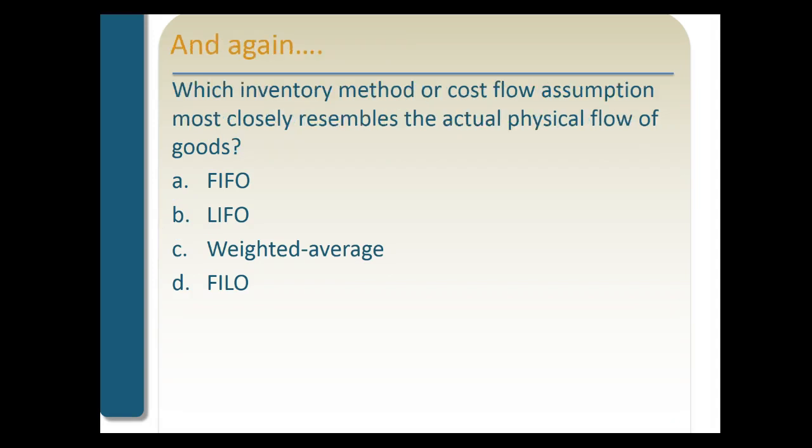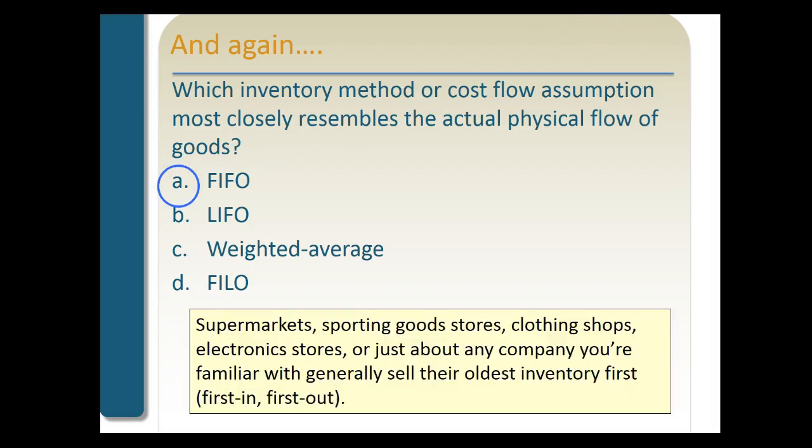Which inventory cost flow assumption most closely resembles the actual physical flow of goods? The answer is FIFO. Supermarkets, sporting goods stores, clothing shops, electronic stores — just about any company you're familiar with sells their oldest inventory first. That's the FIFO physical flow.